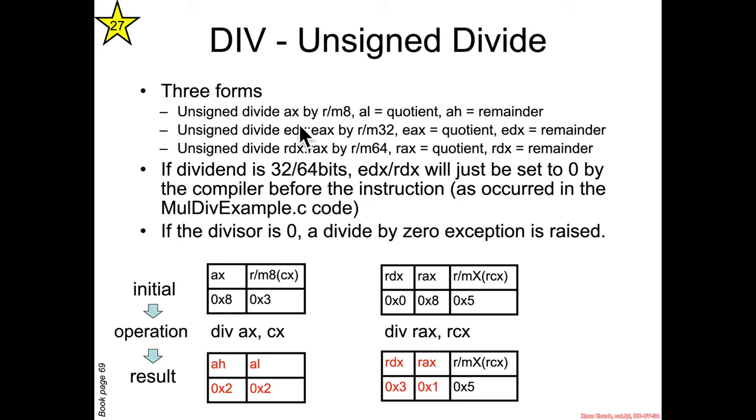The first form was the 16-bit AX divided by an 8-bit RM8. The quotient went into AL and the remainder went into A-high. Then in 32-bit mode there was the 64-bit value EDX concatenated with EAX, so that's the upper 64 bits in EDX, lower 64 bits in EAX, divided by an RM32. The quotient went to EAX and the remainder went into EDX.